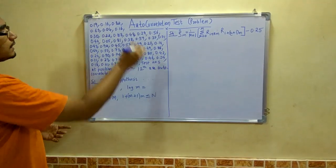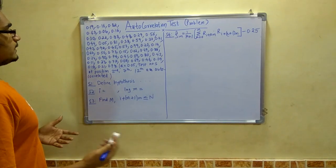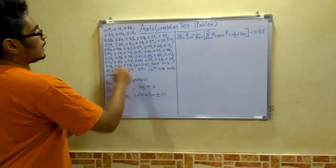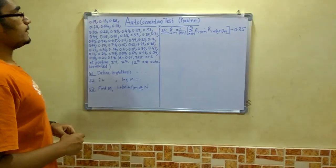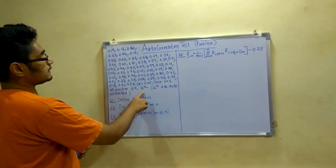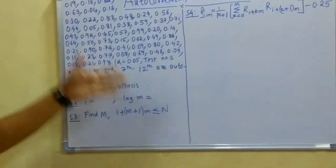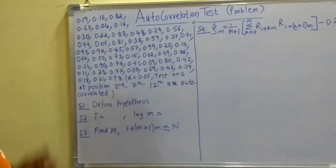Now these are the numbers given for autocorrelation test. And they are saying that alpha is given as 0.05 and you have to test the numbers at positions 2nd, 7th and 12th. And they are asking whether these numbers are autocorrelated or not.